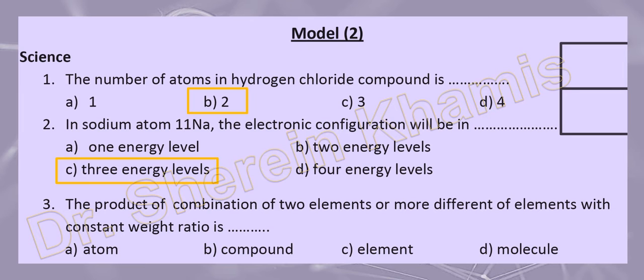Question number three: two elements or more, different elements, with a constant weight ratio — this is the definition of a compound. What is the definition of an element? It is the simplest pure form of matter that can exist freely and carry the properties of matter. An atom is the smallest fundamental building unit of matter that exists inside the element.